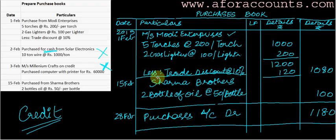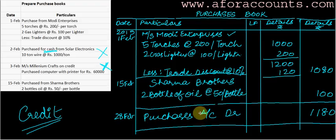Write the party's name and description on top. Less the trade discount in the inside column, then take the amount outside to the final column. One more important point: don't enter any asset purchase in your purchase book, even if it is on credit, because that is not the item with which I deal in my daily business. Only items I deal with in my daily business come in my purchase book and my sales book. So now you can prepare the sales book very easily as well.